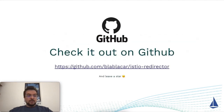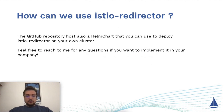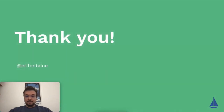The project is now available on GitHub on the BlaBlaCar organization. Feel free to open issues, create pull requests, and comment if you need. You can obviously use Istio Redirector on your own organization by deploying the Helm chart that is also available on the GitHub repository. If you have any questions, feel free to reach me on Twitter or LinkedIn. Thank you for joining and do not hesitate if you have any questions.